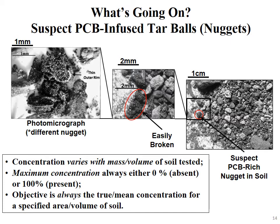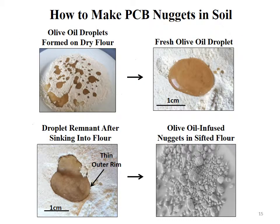You have to designate your targeted volume and area of soil and collect a representative sample. A local chemist who likes to cook showed me how to make PCB-like nuggets in soil — we used olive oil and dry flour instead of PCB oil. Try this at home: take some dry flour, spread it out thinly, dribble some olive oil on it, and watch what happens. The same thing probably happens when PCB mineral oil is dumped on the ground — it beads up and forms little droplets, which slowly sink into the flour. Around the outer edge as it sinks you get this thin outer rim wider than the stuff inside, containing more flour — we saw the same structure under the microscope at the PCB site.